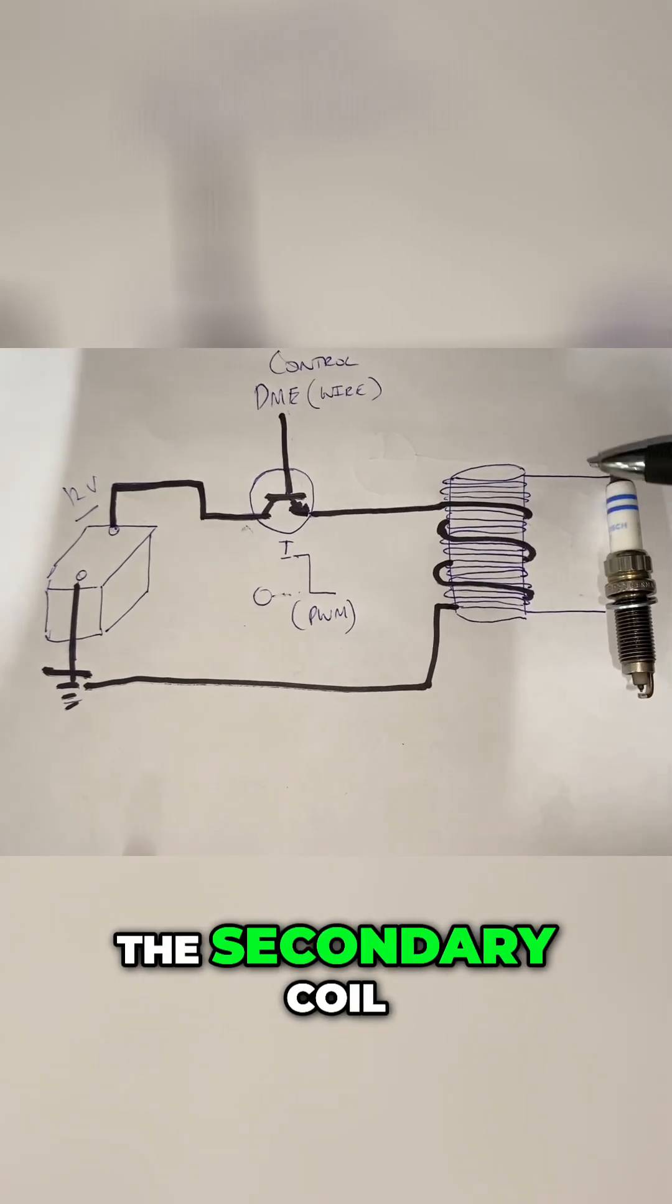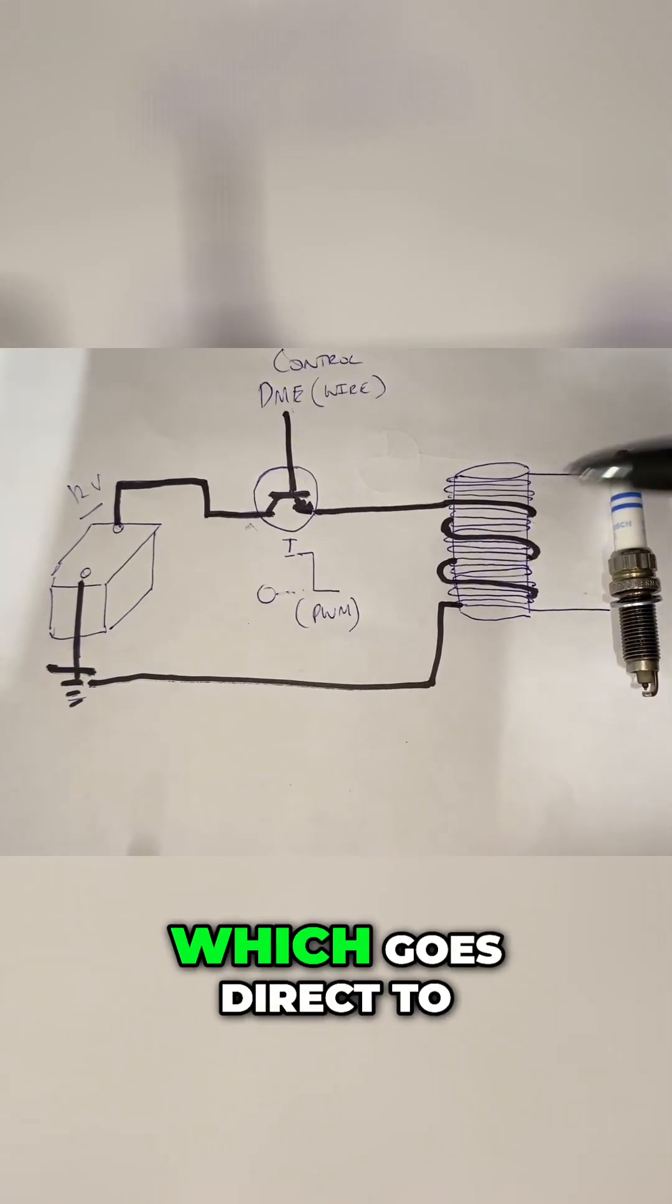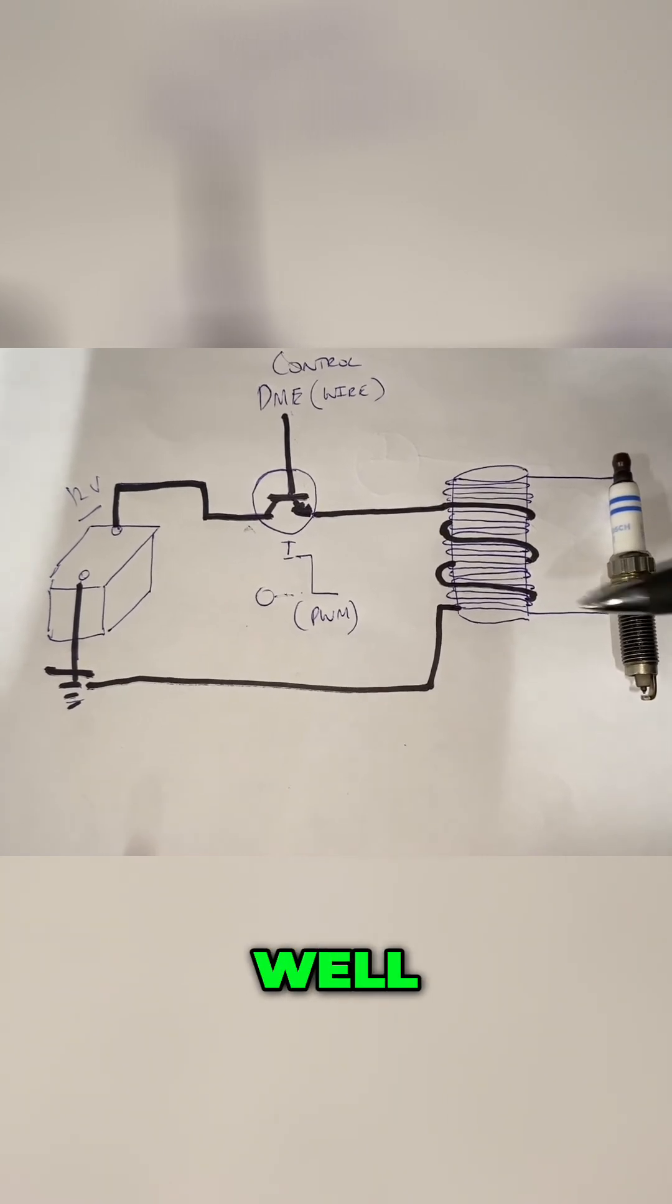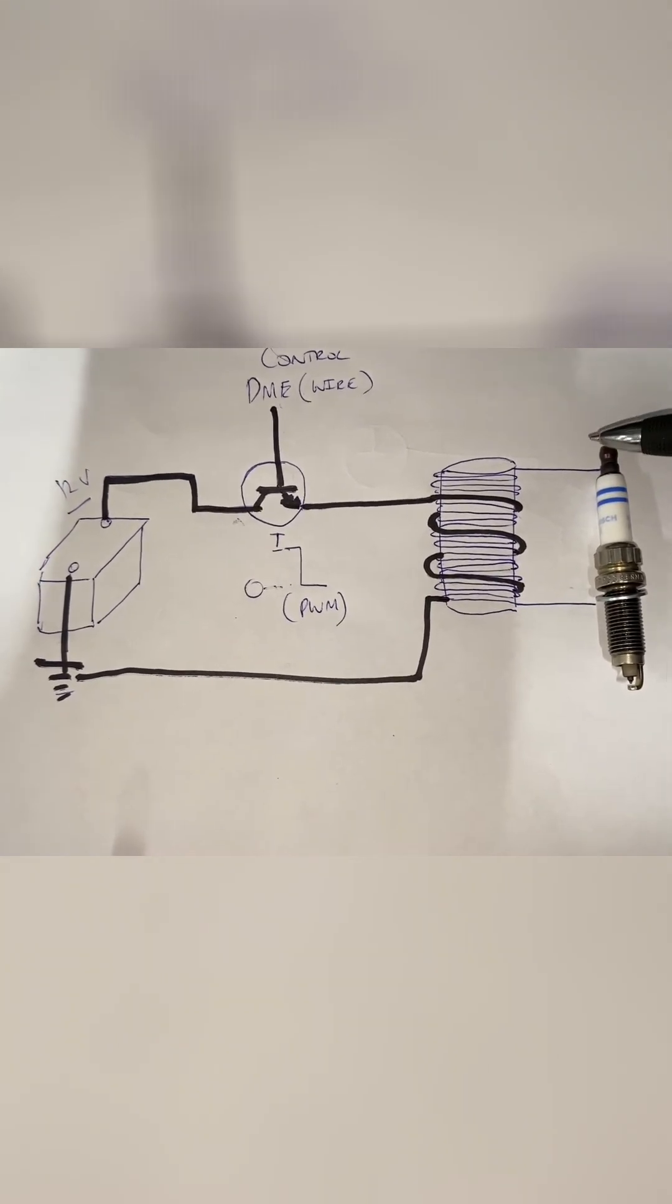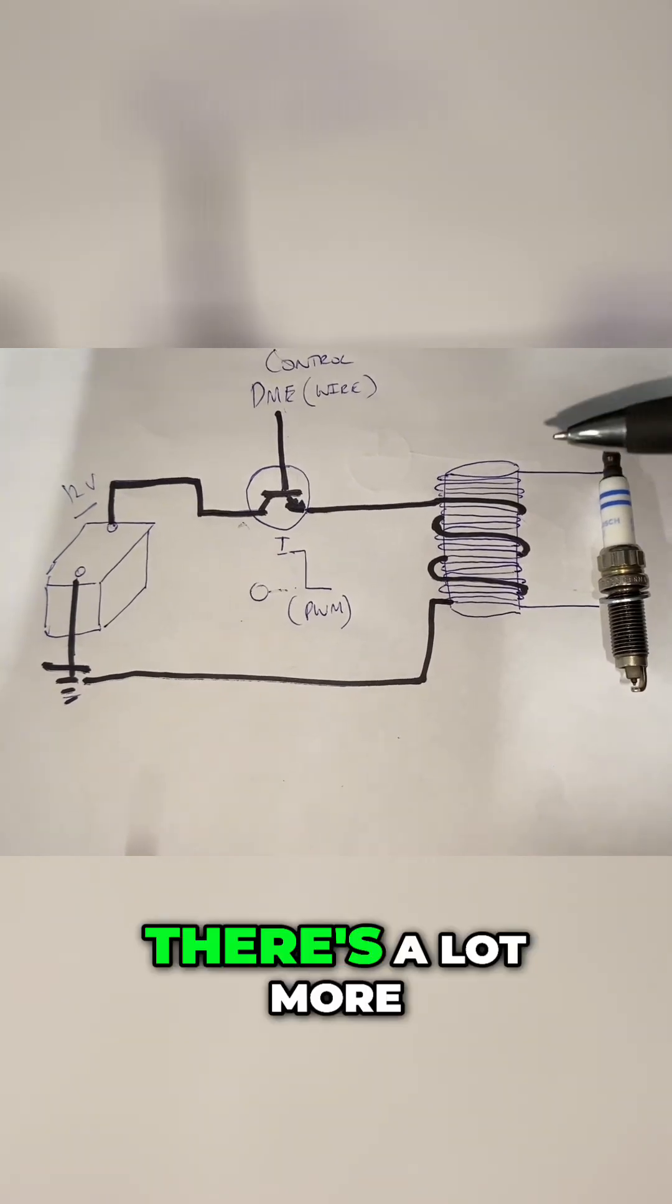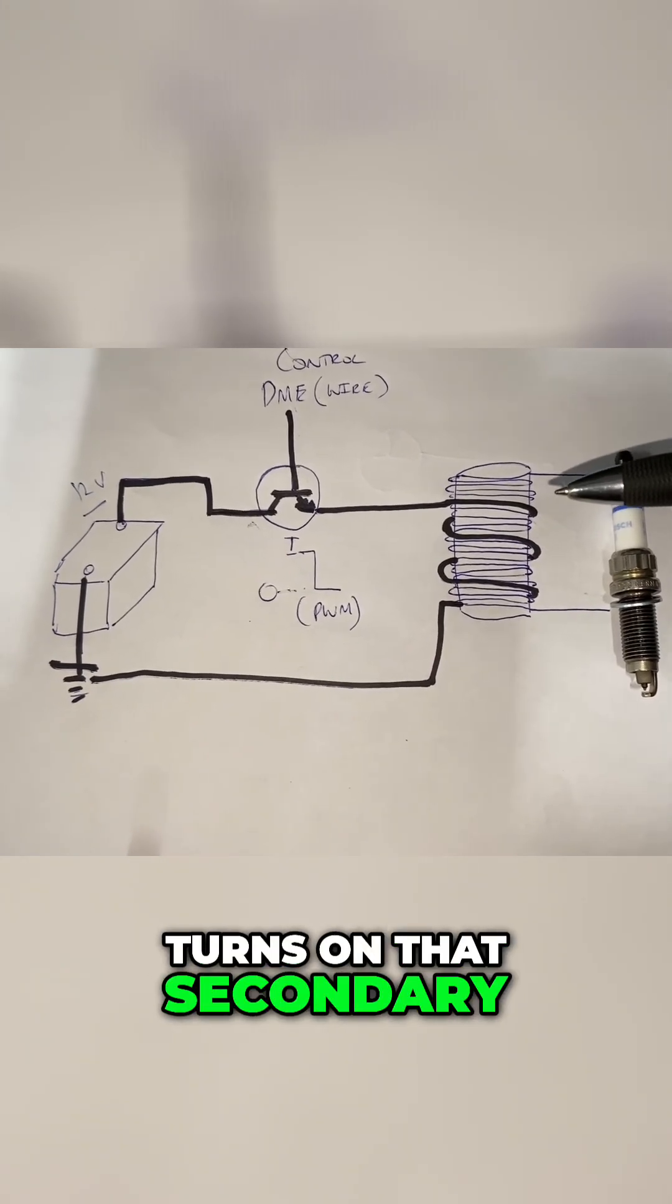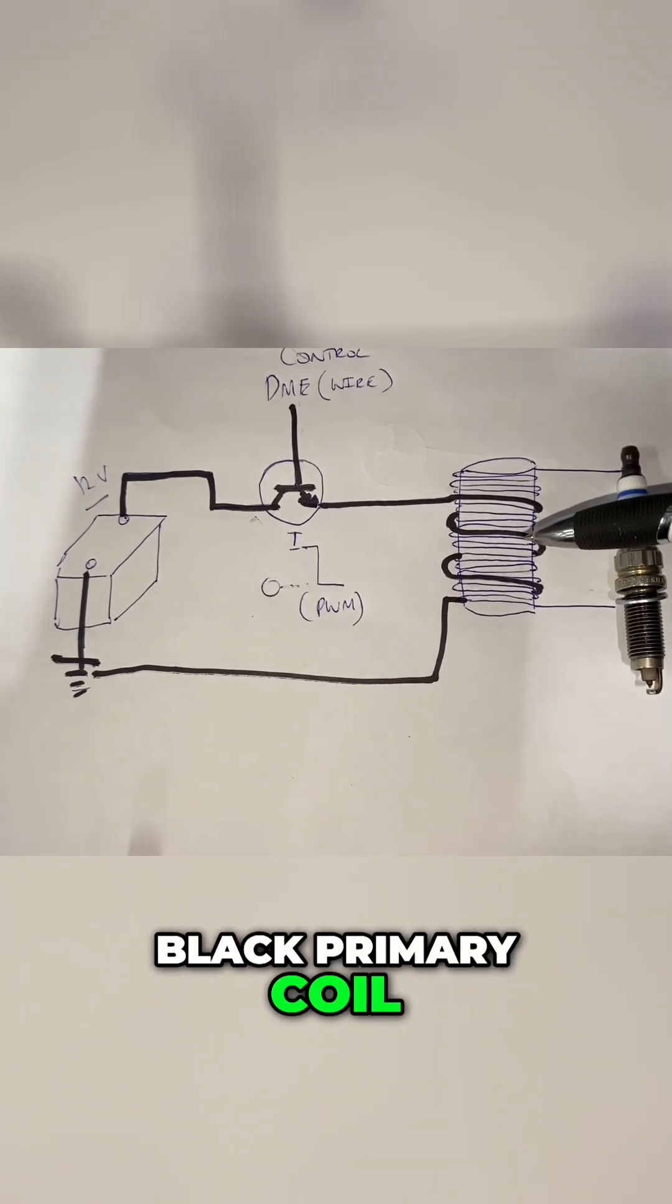So many turns on the secondary coil, the blue one I've put here which goes direct to the spark plug to fire it. It goes direct to the output part of the coil which is connected here. There's a lot more turns on that secondary coil compared to this black primary coil.